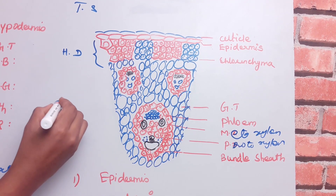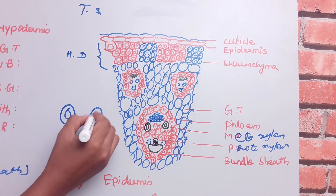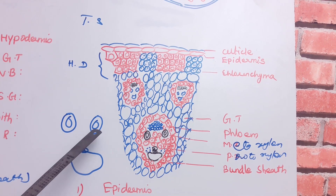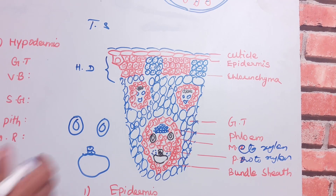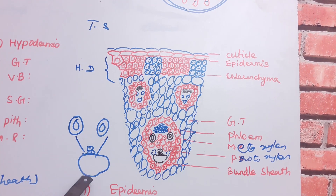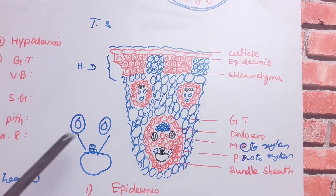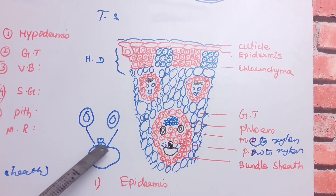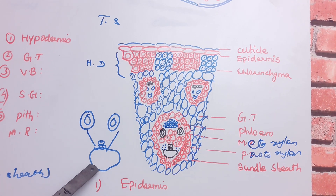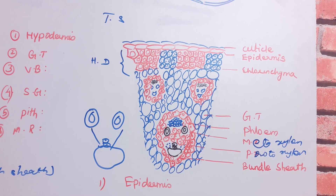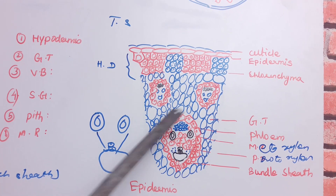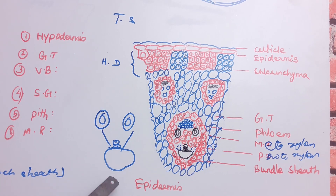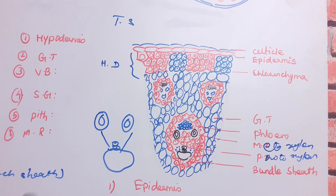Inside the bundle sheath, the xylem has a Y-shape. The metaxylem is at the top and the protoxylem is at the bottom. In the mature vascular bundle of the monocot stem, the protoxylem disintegrates to form a cavity called the protoxylem lacuna.